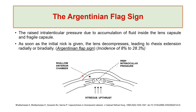There is a pressure gradient from the inside of the lens to the outside of the lens, causing the anterior capsule to run out so you will lose the rhexis. Once you make the initial nick in the anterior capsule, the lens decompresses, and the pressure difference between intralenticular and anterior chamber pressure causes the anterior capsule to extend radially or biradially. If it extends biradially, it causes what is known as the Argentinian flag sign, with an incidence of 8% to 28.3%. So it is common, not a rare complication.